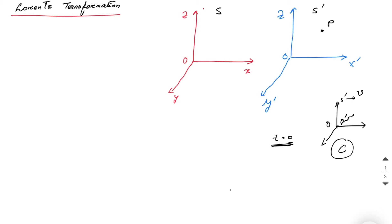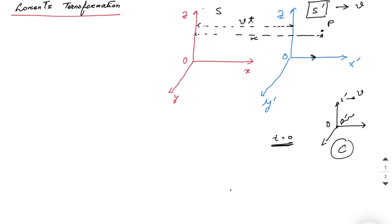This frame of reference is moving along the x-axis. The distance between the two frames is vt, since S' moves with velocity v. The distance from origin O to P is x, and the distance from O' to P is x'.